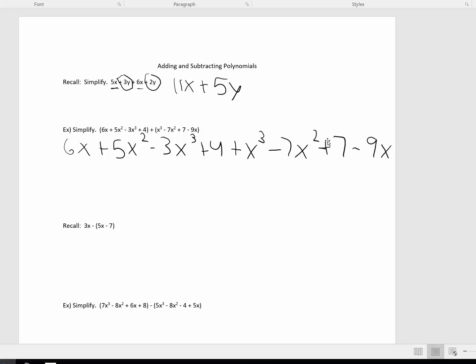Now, combine like terms. Well, negative 3x cubed plus 1x cubed is negative 2x cubed. 5x squared minus 7x squared is negative 2x squared. 6x minus 9x is negative 3x. And 4 plus 7 is 11.